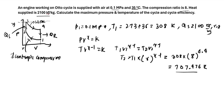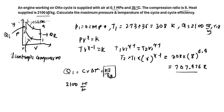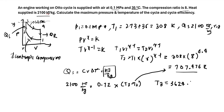We calculate T3 using the heat supplied equation. At constant volume, Qs = Cv × ΔT (in kJ/kg units). With Qs = 2100 kJ/kg and Cv = 0.72 kJ/kg·K, we have 2100 = 0.72 × (T3 − T2). Substituting T2 = 704.476 K, we get T3 = 3624.14 K, which is the maximum temperature.